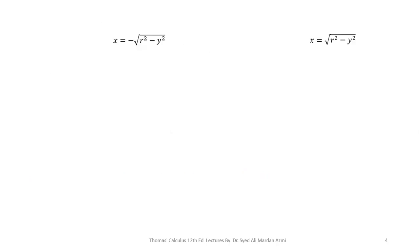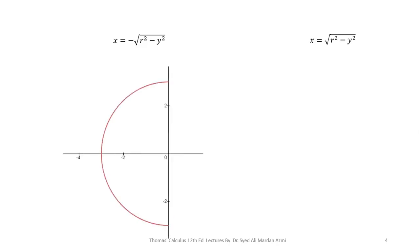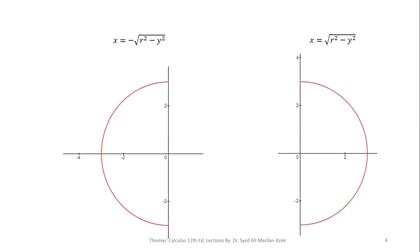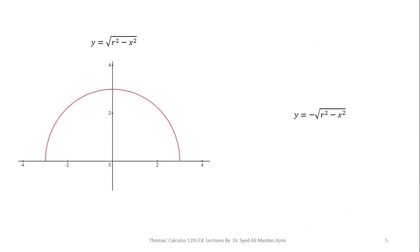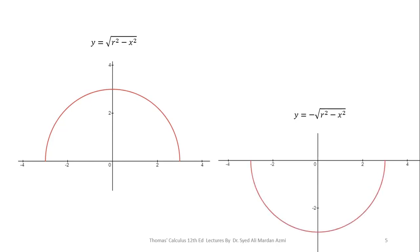x equals negative square root of r squared minus y squared is the equation of a semicircle in the left half-plane. x equals square root of r squared minus y squared is the equation of a semicircle in the right half-plane. y equals square root of r squared minus x squared is a semicircle in the upper half-plane. y equals negative square root of r squared minus x squared is a semicircle in the lower half-plane.